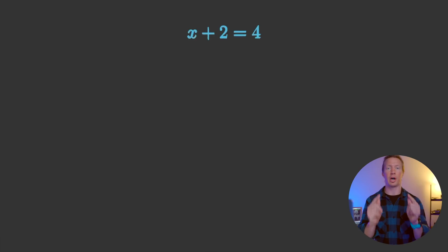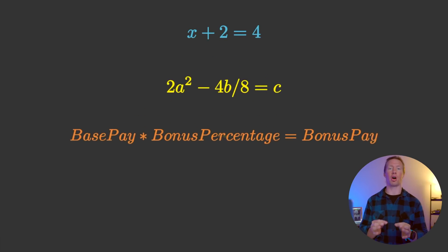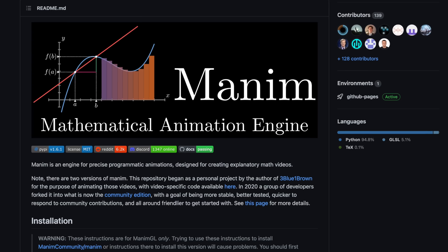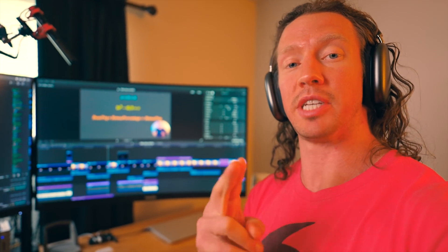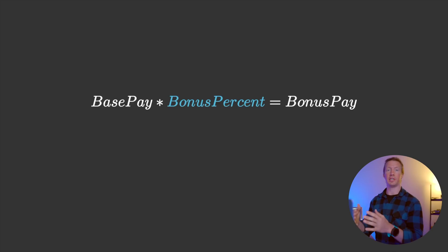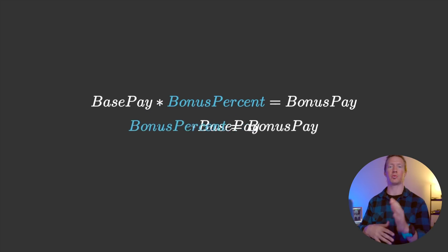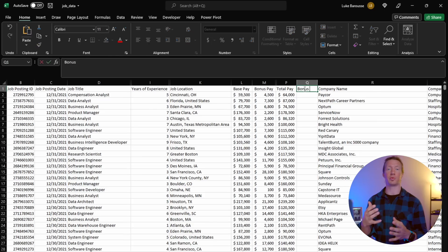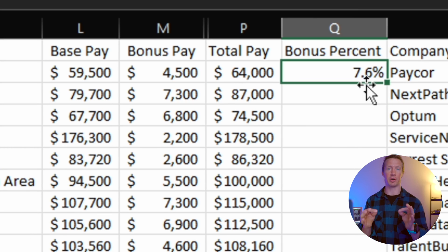Beyond arithmetic, algebra is the next most common type of math that I use. In this, you use unknown quantities along with known numbers to solve for missing values. In the case of this job data, let's say we're trying to calculate the percentage a bonus is of the base pay. We would need to use algebra to rearrange this formula to solve for that bonus percentage. Once it's rearranged, we can plug this into Excel and calculate that percentage. This basic math, along with a lot of the other concepts we'll cover today, can really be performed in any data analytics tool.